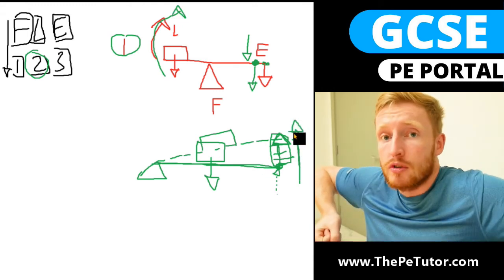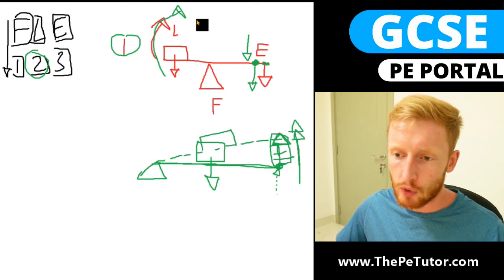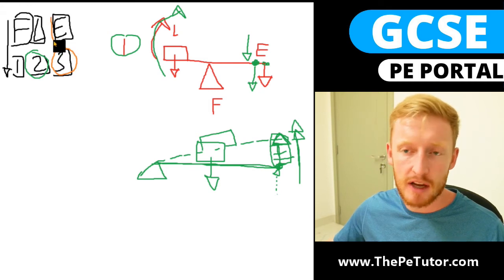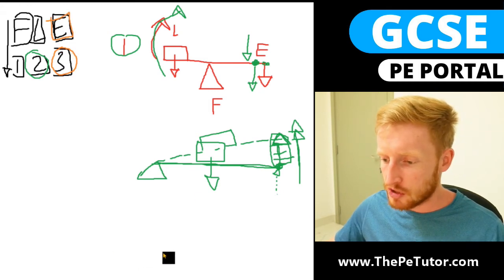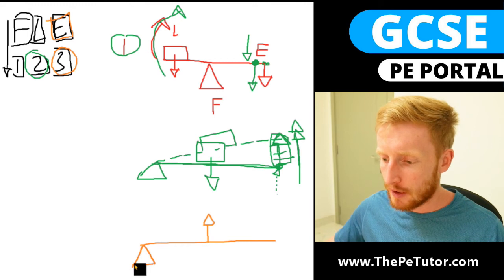And the same goes for our third class lever. So third class we're looking to have the effort in the middle. So we have our rigid bar, we have our effort pulling this bone upwards, and then for it to make sense the fulcrum is obviously underneath and the load would be on top with gravity working down.